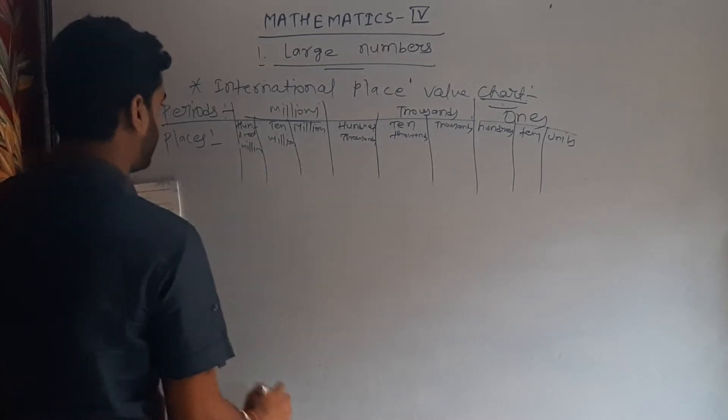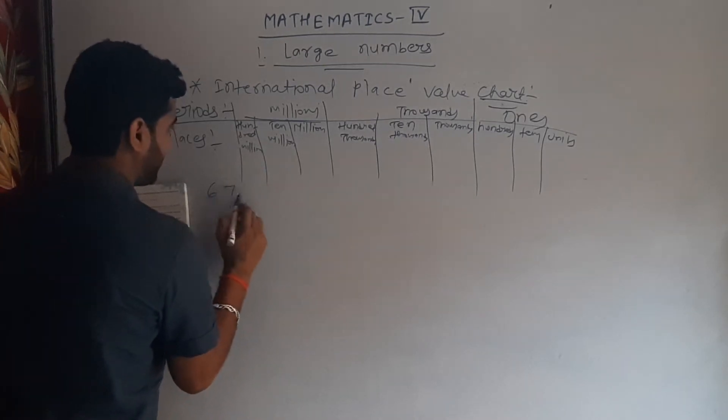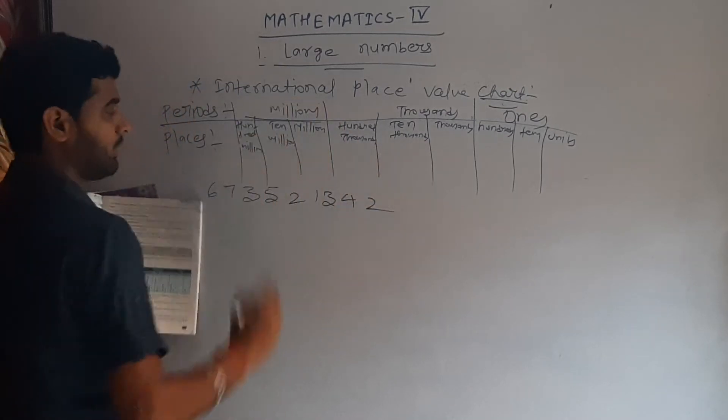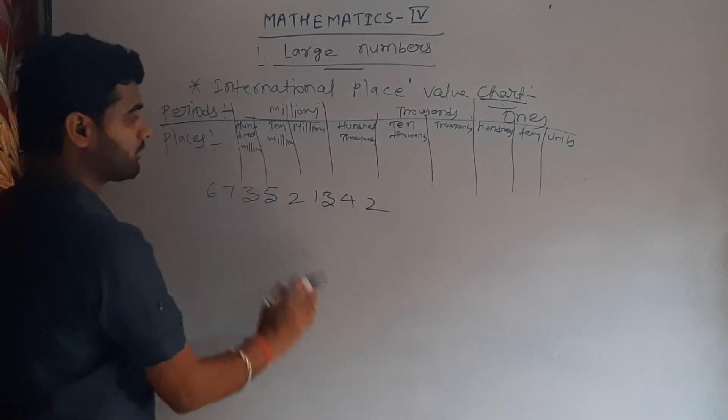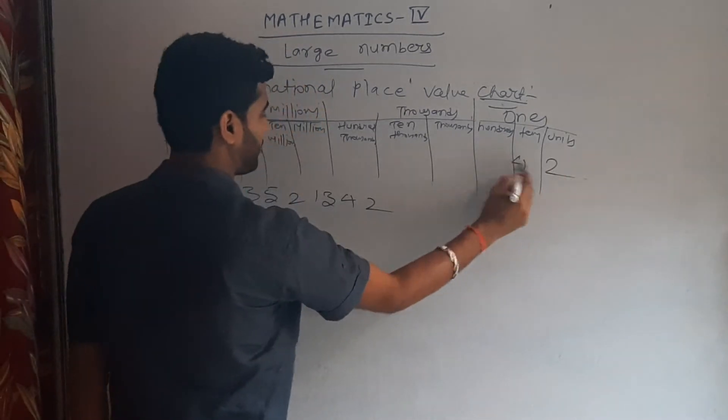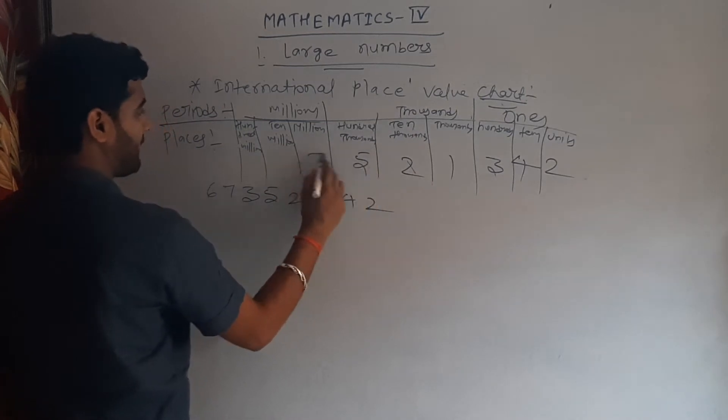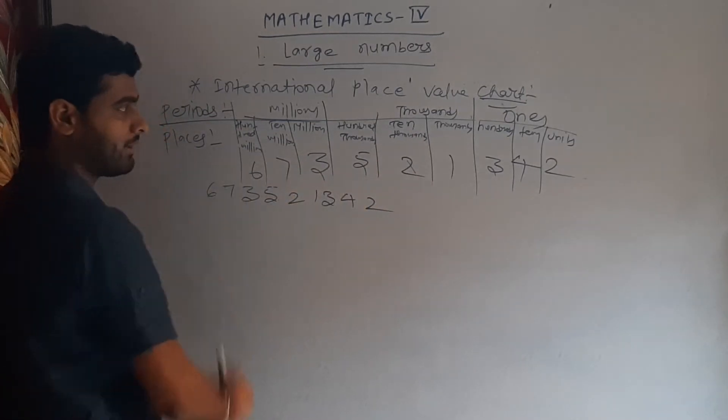So if you have to write a number 67,35,21,342 in international place value chart, so we write here 2, 4, 3, 1, 2, 5, 3, 7, and 6.